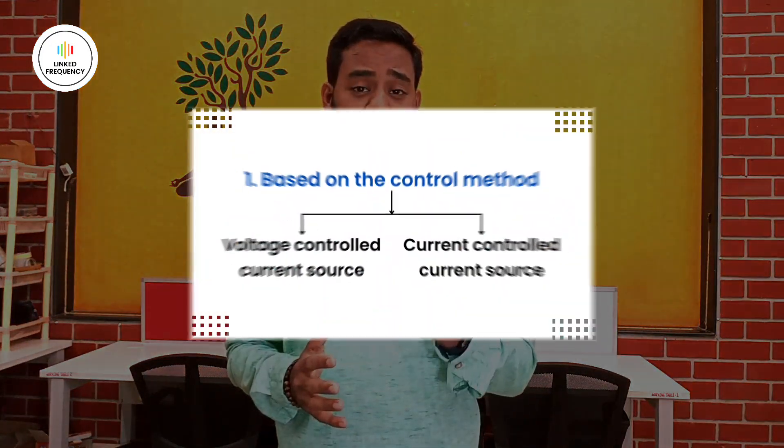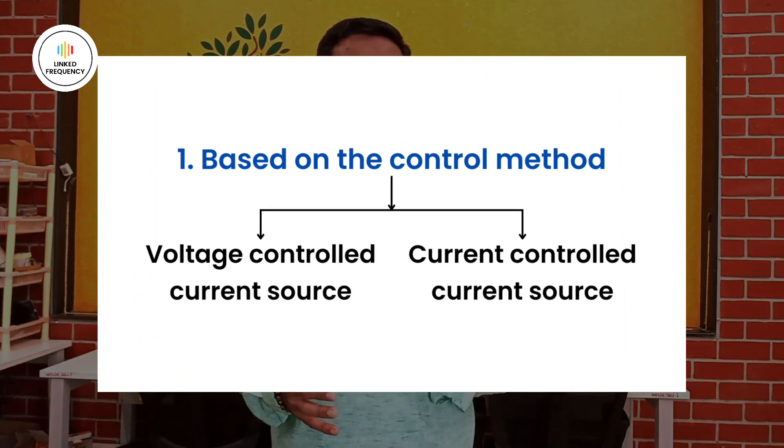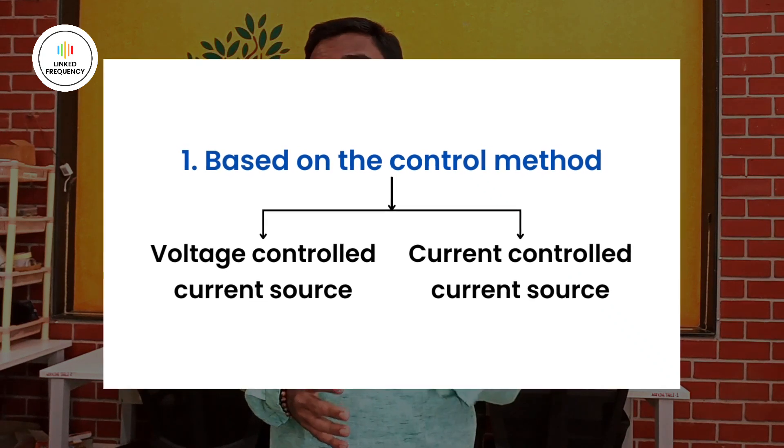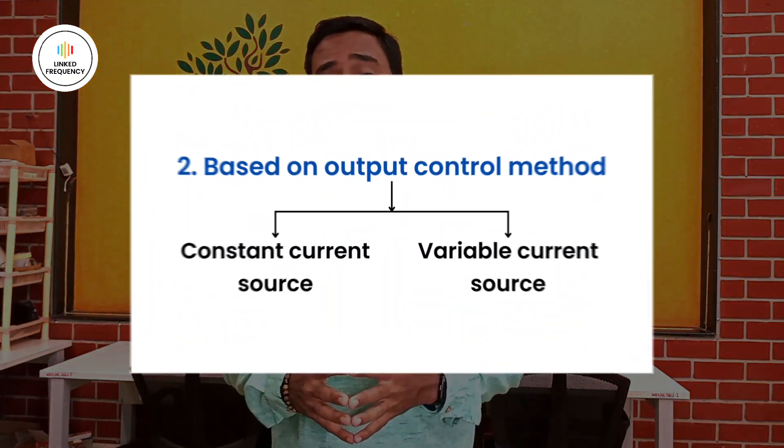There are several current sources visible in industry, categorized in a broader way. Based on the control method, we have two types: voltage controlled current source and current controlled current source. If you use the input voltage to control the maximum amount of current delivered to the load circuit, it is called a voltage controlled current source. If you use the input current to control the output current based on the circuit inside, it is a current controlled current source.